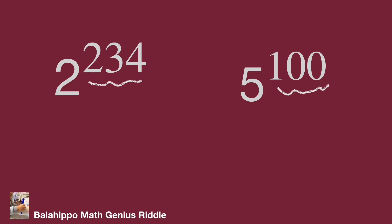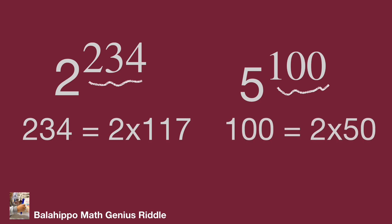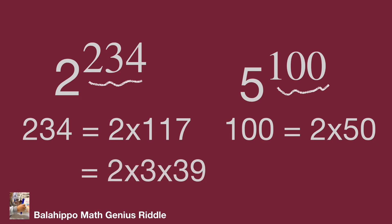Try to find the connection between them. At first, factorize: 234 equals 2 times 117, and 100 equals 2 times 50. They have the same factor 2. But 117 and 50 seem to have no connection. Factorize 117 equal to 3 times 39. Then 3, 39, and 50 — I also cannot find the relationship. Okay, let's find another way.